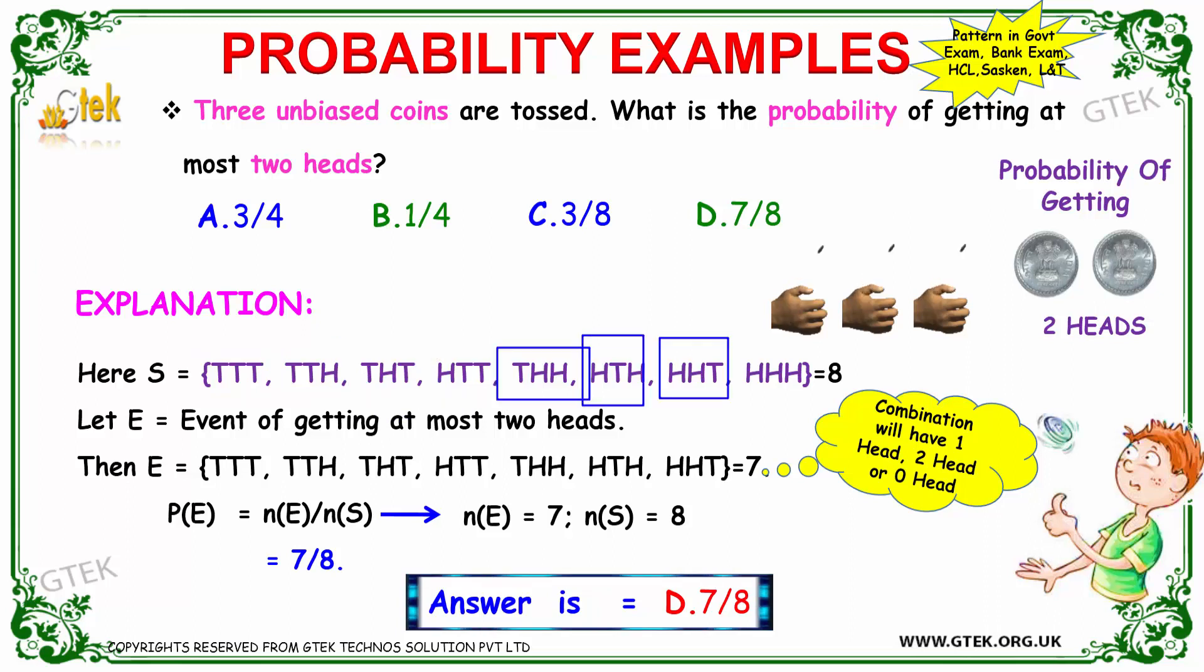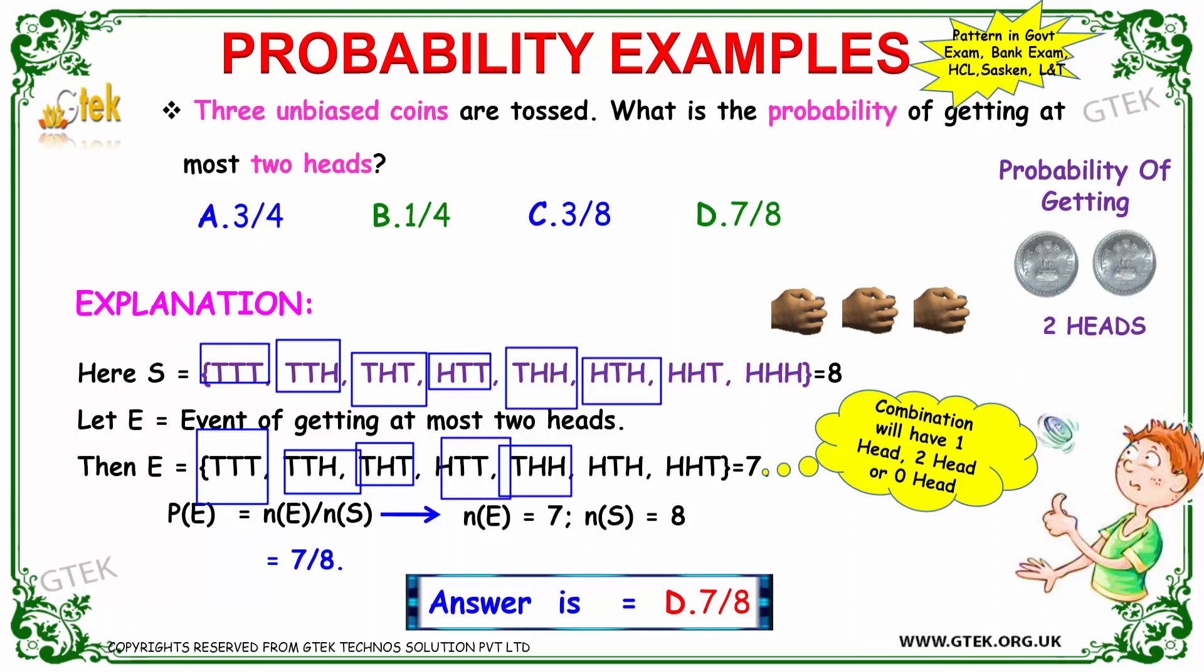The outcomes with at most two heads are: zero heads, one head (three outcomes), and two heads (three outcomes). We can't include three heads because it's more than two. So the possibility is seven, and seven divided by eight is the probability.